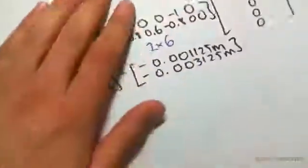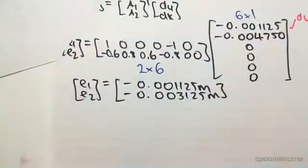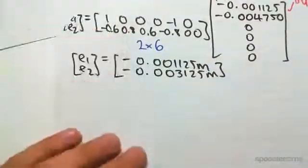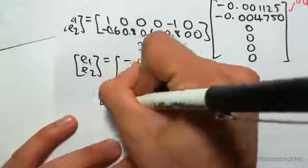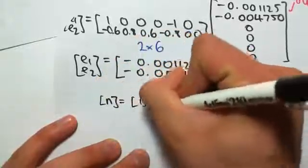So once again, very simple, no inverse or anything like that. It's just simple matrix multiplication. If you weren't there for the derivation video, the formula is just n equals b times e.